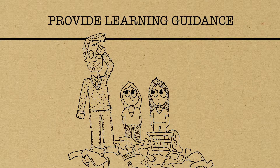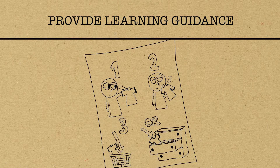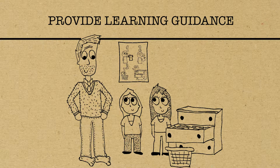Let's say you are trying to teach your children how to put away their clothes to help keep their rooms tidy. You may find yourself constantly reminding them to put dirty clothes in the hamper and hang up or fold clothes that can be worn again. If these reminders just aren't working, you might consider a different type of learning guidance, like a job aid that breaks down the steps of the task visually that they can keep in their room. Thinking outside the box and creating something original and interesting just might do the trick.